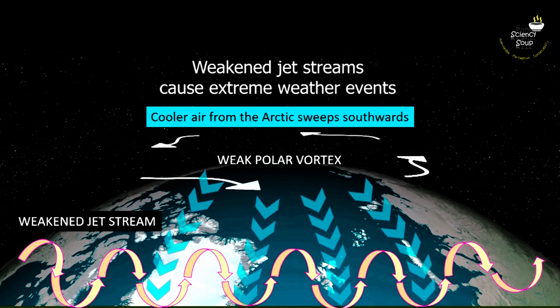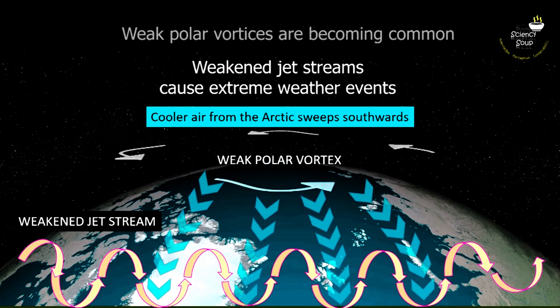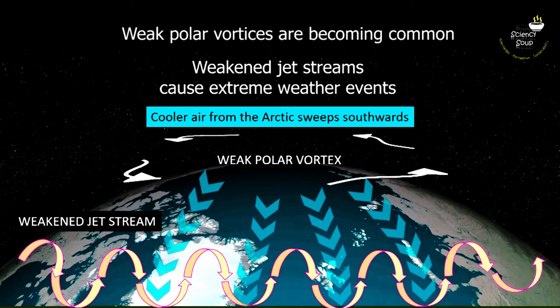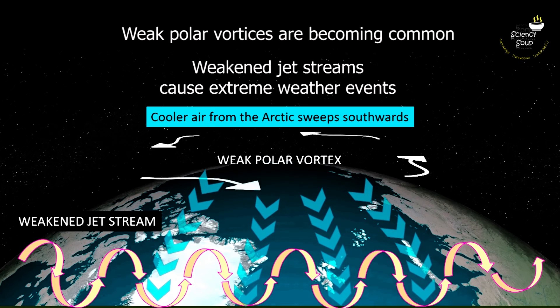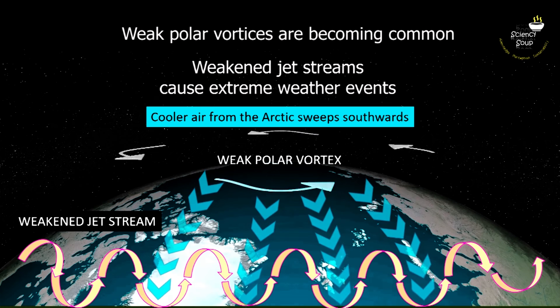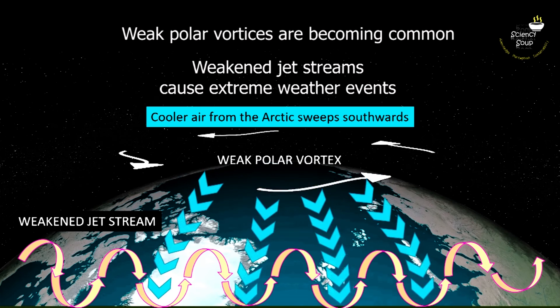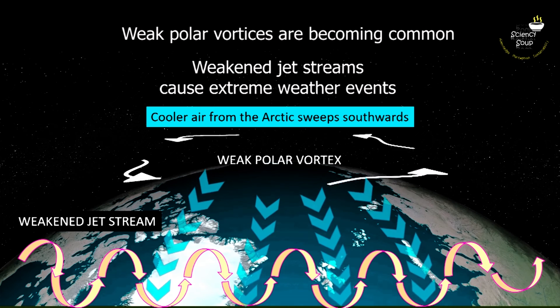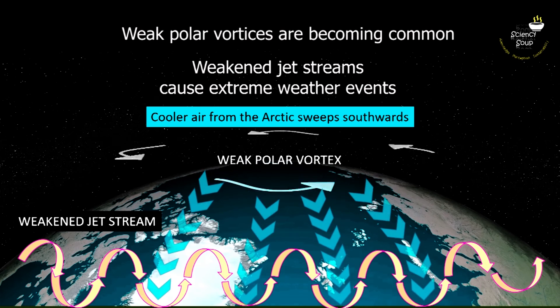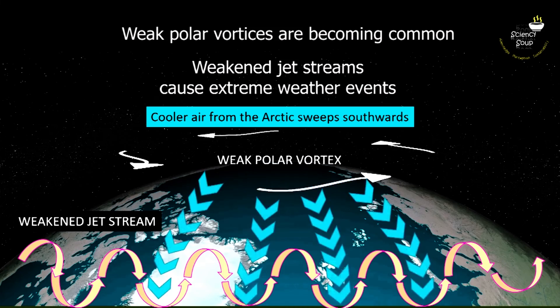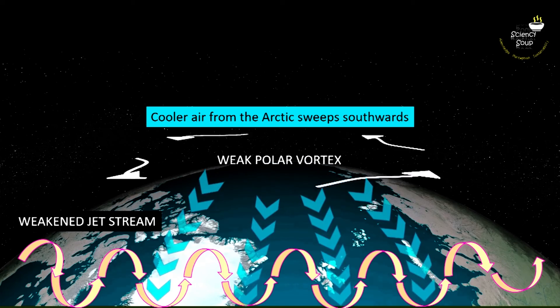With increasing global temperatures, weakened polar vortices are becoming much more common, making winters more and more extreme in some parts of the world. Now I understand how local weather conditions are being affected by global climate conditions.